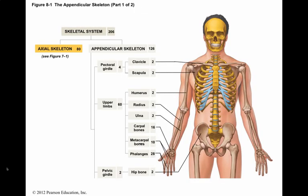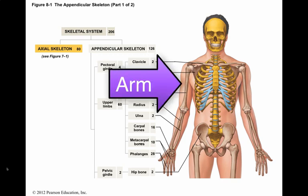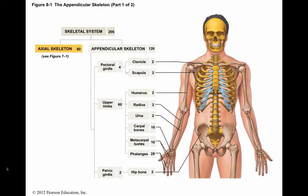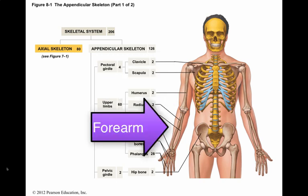The skeleton of the upper limbs consists of the bones of the arms, forearms, wrists, and hands. The term arm refers to the upper limb from shoulder to elbow, also called the brachium, which consists of one bone: the humerus. The forearm, or antebrachium, consists of two bones: the radius and the ulna.